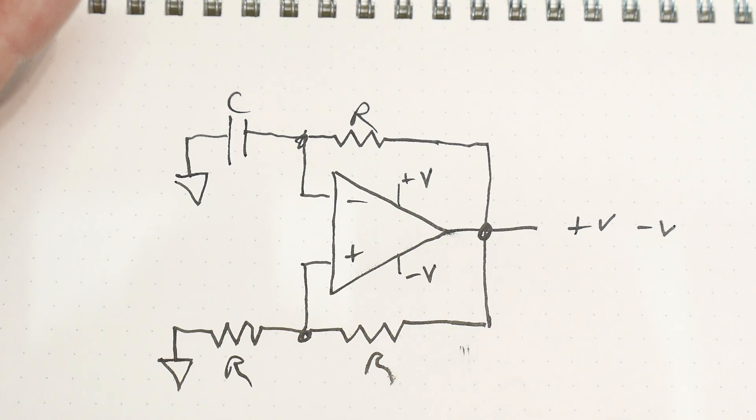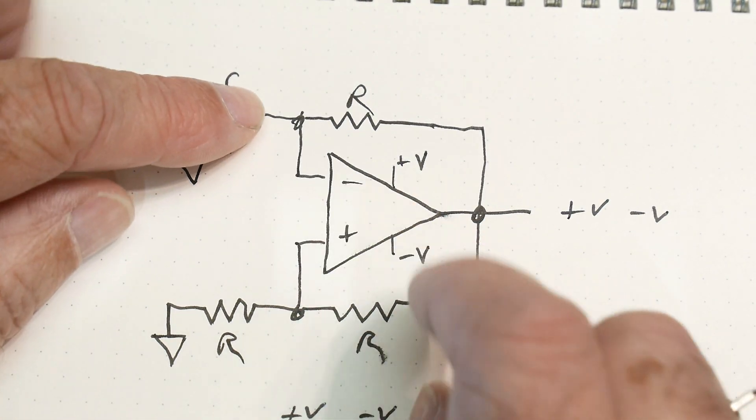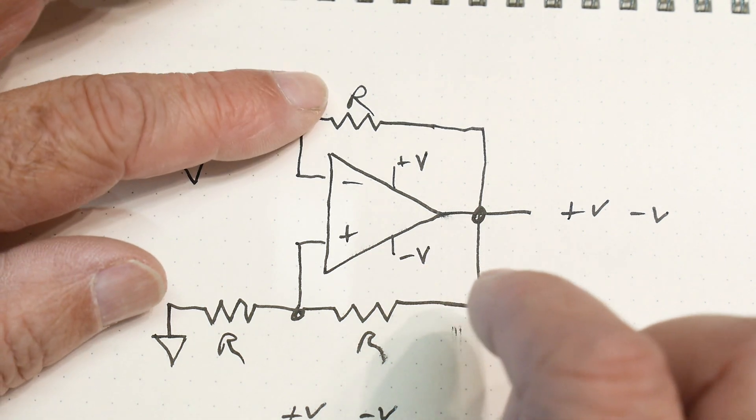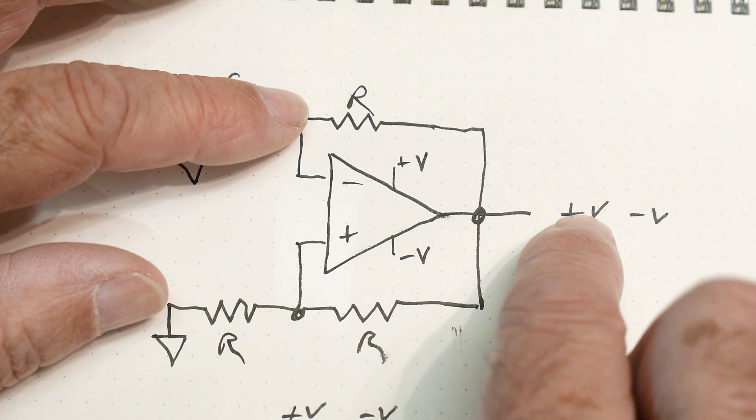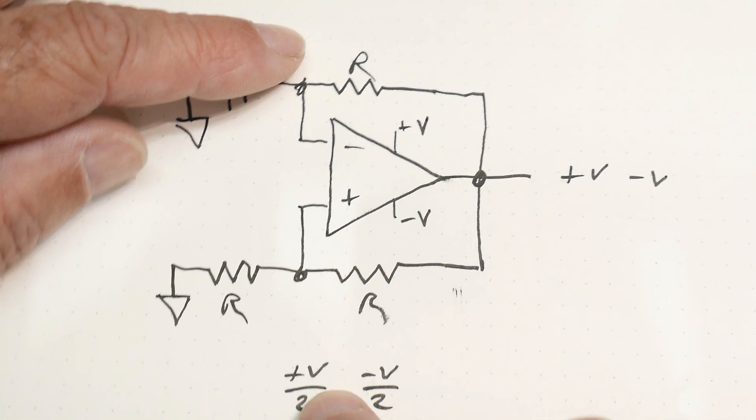So what does the op amp do? Well, if you start at some condition, let's say you start at the plus V condition, then you have plus V over 2 here.